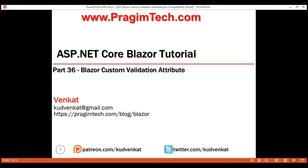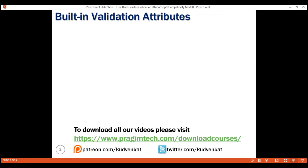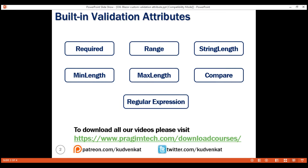This is part 36 of the Blazor tutorial. In this video, we'll discuss why and how to create a custom validation attribute in Blazor. For most use cases, ASP.NET Core has several built-in validation attributes. If we have a validation requirement that we cannot implement using these built-in attributes, we can always create a custom validation attribute.